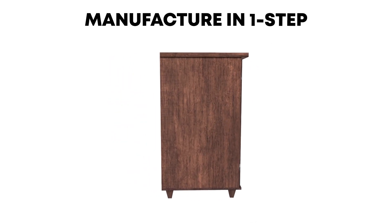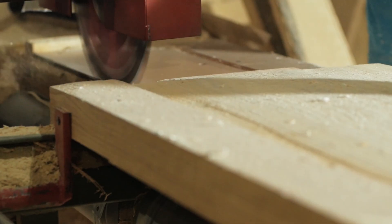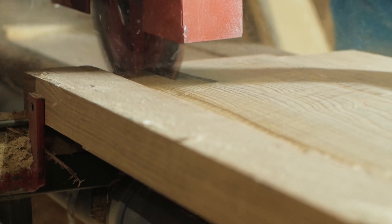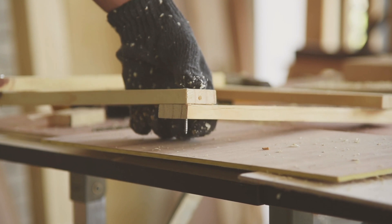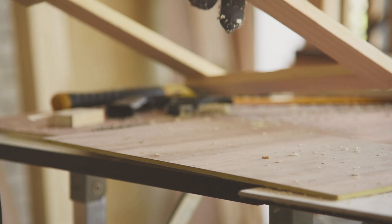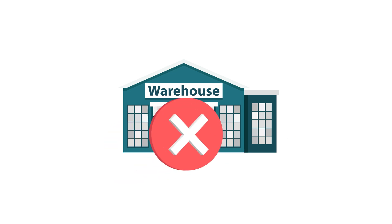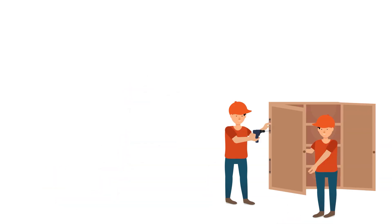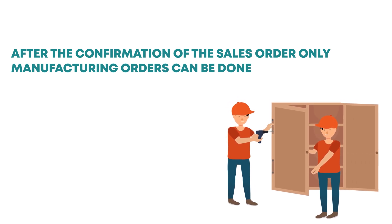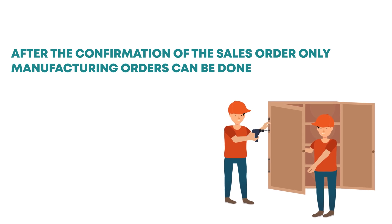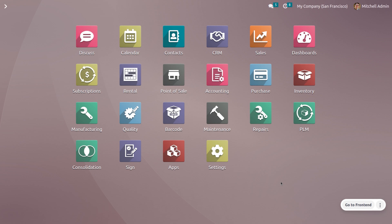Michelle admin wants to manufacture the product cabinet within one step. In order to manufacture the product he requires 30 components such as screws and wooden panels. Whenever he wants to manufacture the product in one step, he may not be keeping the raw materials in stock, so when he gets a manufacturing order he will take the raw materials and keep them in stock for manufacturing.